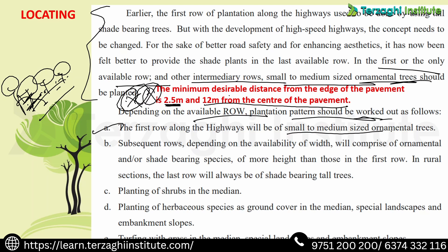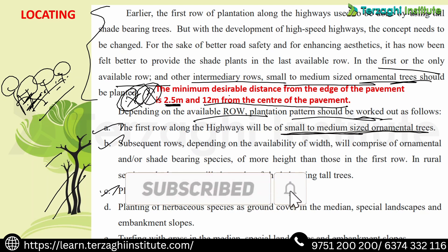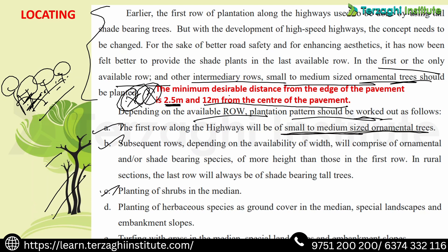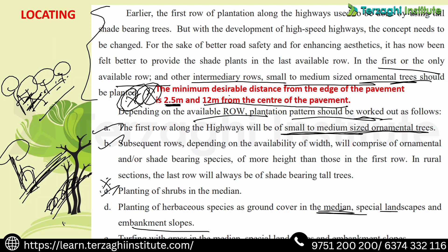The first row along the highways will be of small to medium size ornamental plants. In subsequent rows, depending on width availability, there are ornamental plants or trees. In the median — the traffic separator or divider — shrubs are planted. First row: small and medium sized ornamental plants. Second row: shrubs. Also, planting of herbaceous species as ground cover in the median, with special landscapes and embankment slopes, and turfing with grass in the median.